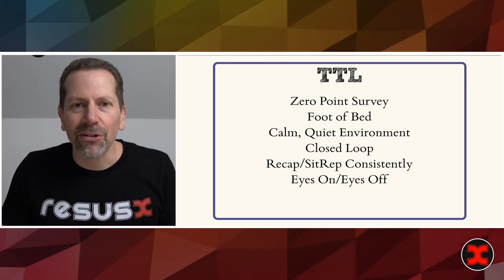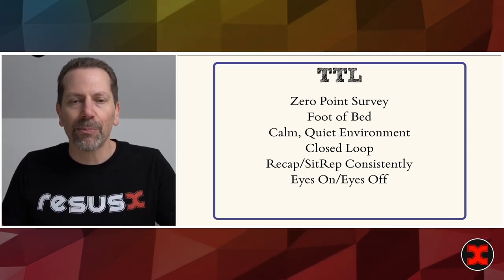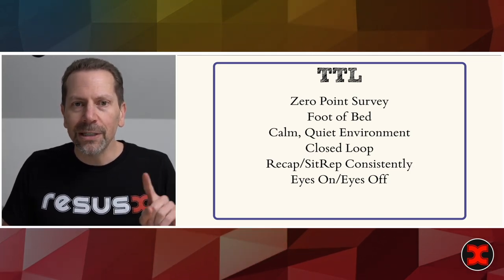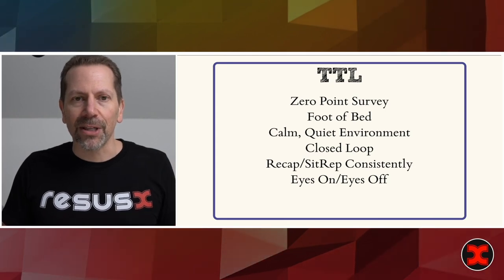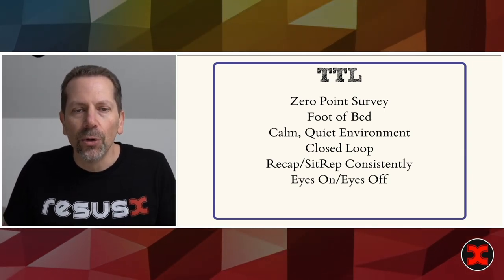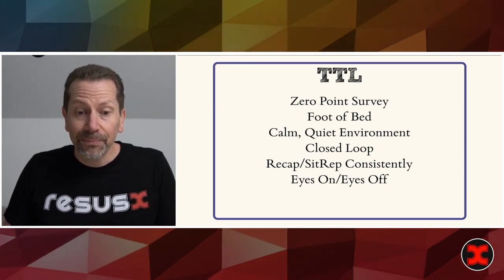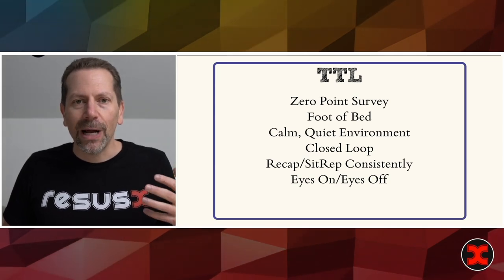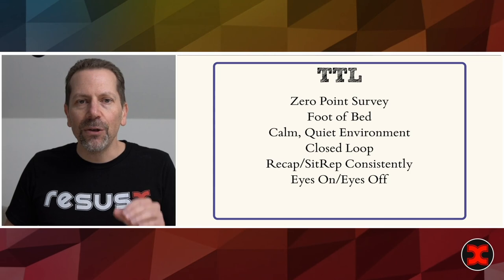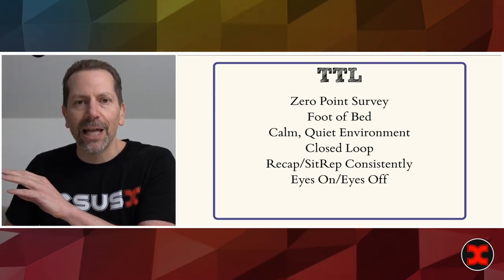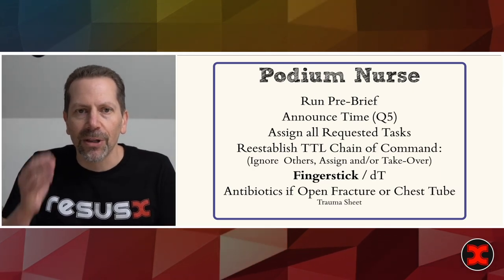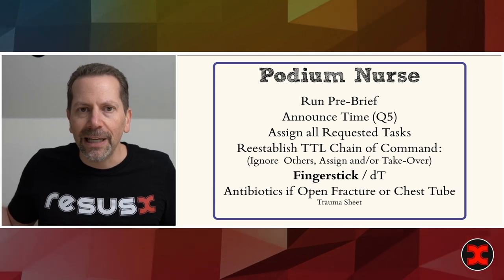The trauma team leader stands at the foot of the bed where they can control the room. They're not involved in procedures or things going on at the head of the bed — you need a separate team for that. This differs from ATLS, which is made for one doc and one nurse in a rural environment. In academic trauma centers there's always extra help, so you stay out of the fray, keep a calm and quiet environment, use closed-loop communication, and do sit-reps throughout the resuscitation. If you need to get involved in a procedure, you assign someone else to maintain 360-degree awareness — we call this 'eyes on, eyes off.'